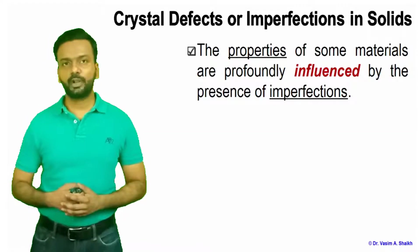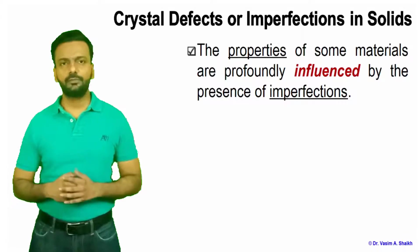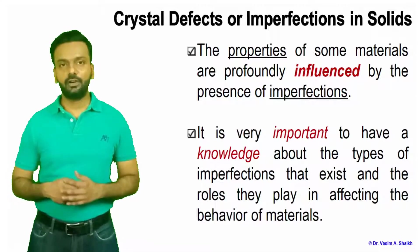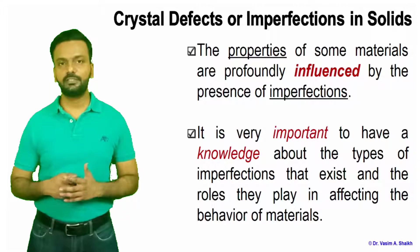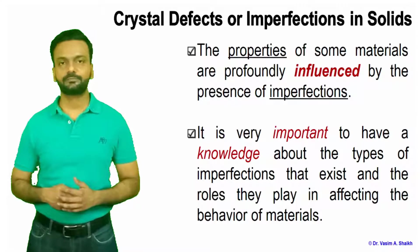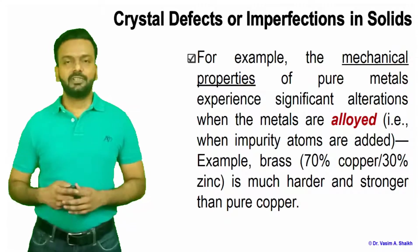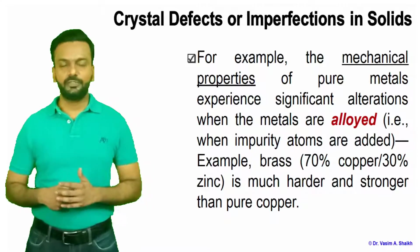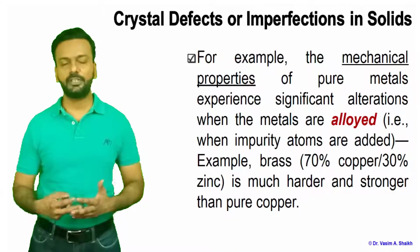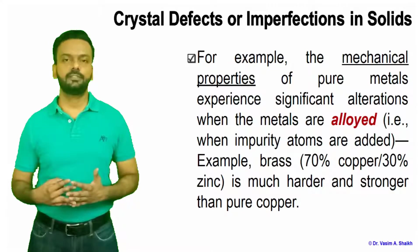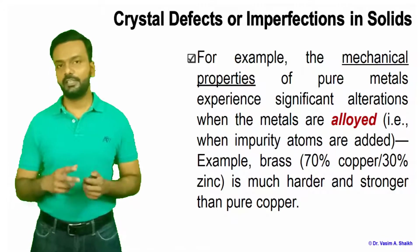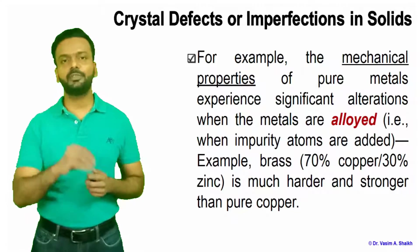Some properties of these materials are profoundly influenced by the presence of these imperfections. It is very important to have knowledge about all these defects and the roles they play in affecting the properties or behavior of the material. For example, one type of imperfection we deliberately put in the material to get a certain property is called alloying.